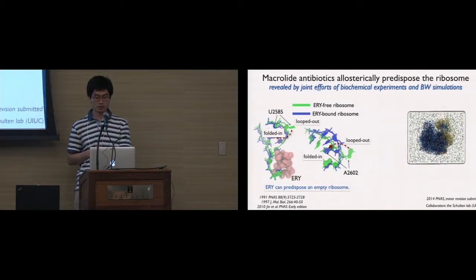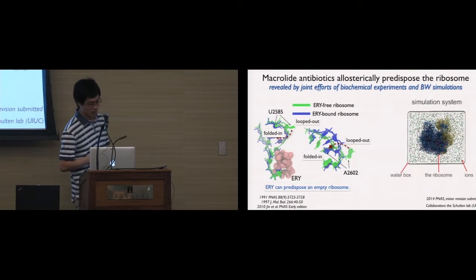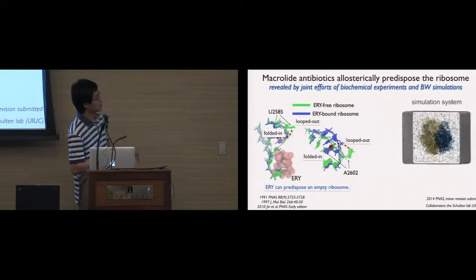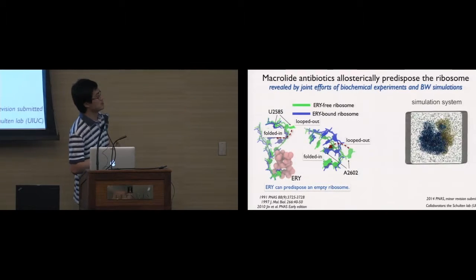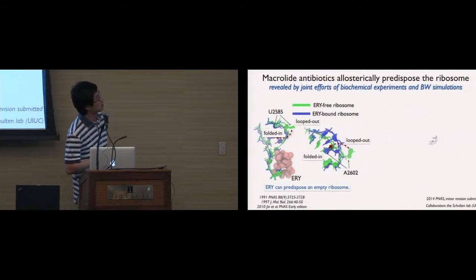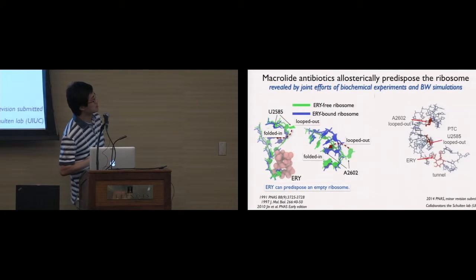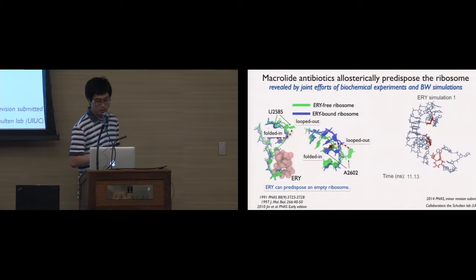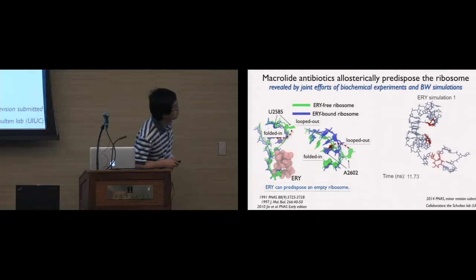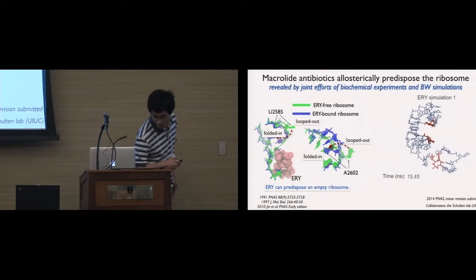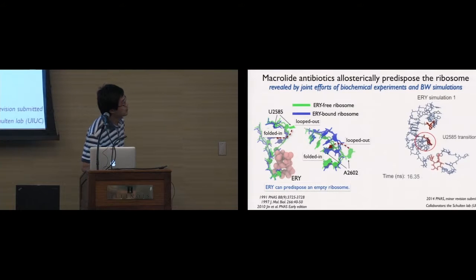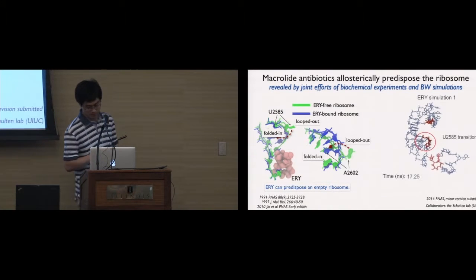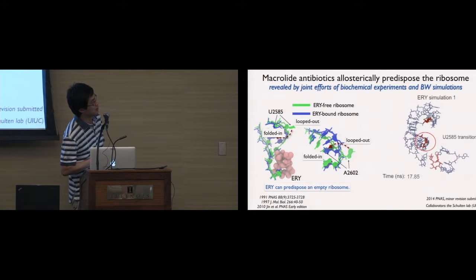As we can see by this movie — this is a movie of one of our simulations. We performed multiple independent simulations to verify the finding. This movie shows the transition events of the two nucleotides. In this particular simulation, U2585 changed orientation from the looped-out orientation to the folded-in orientation, as we can see in this movie, then followed by A2602.